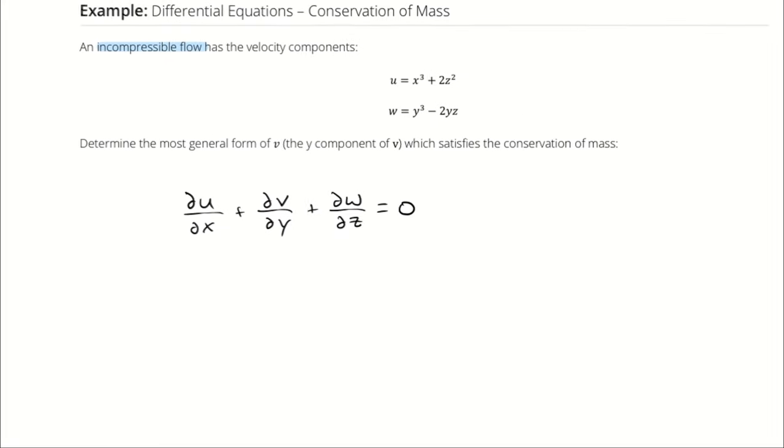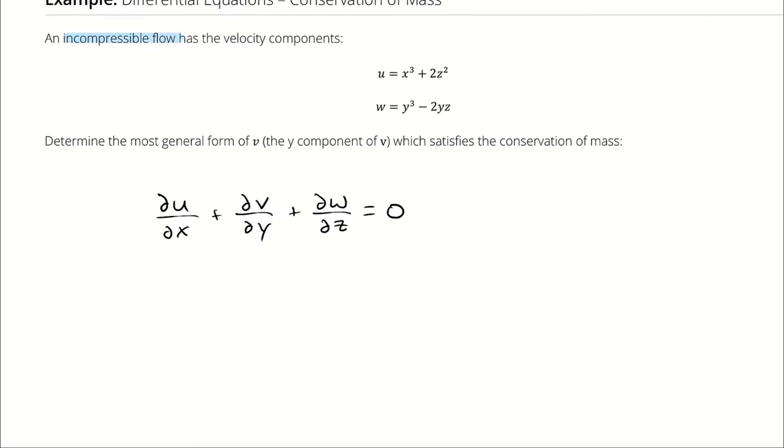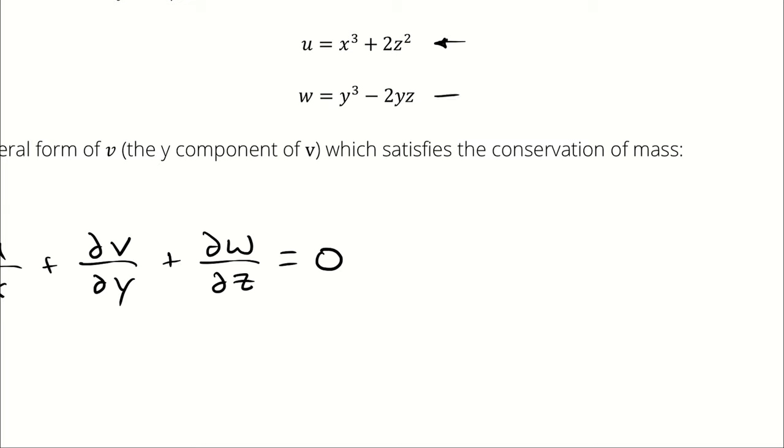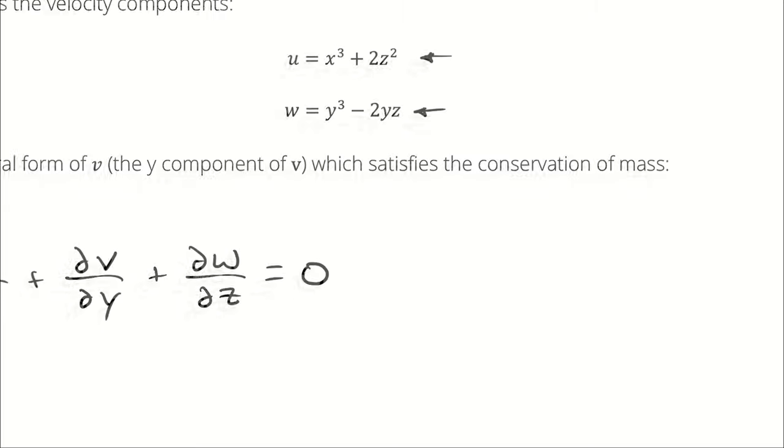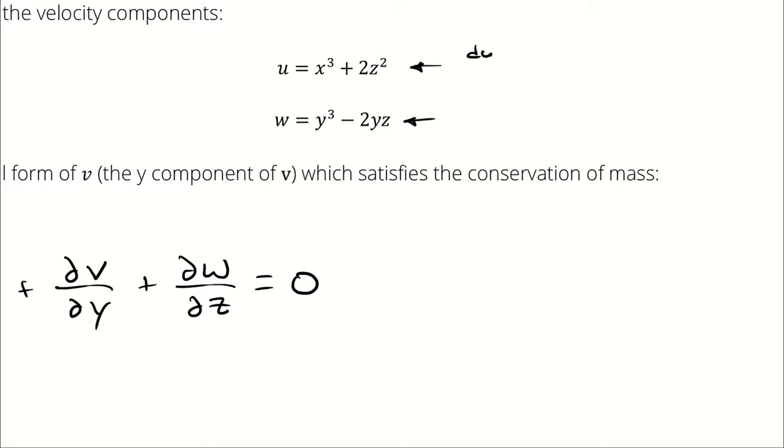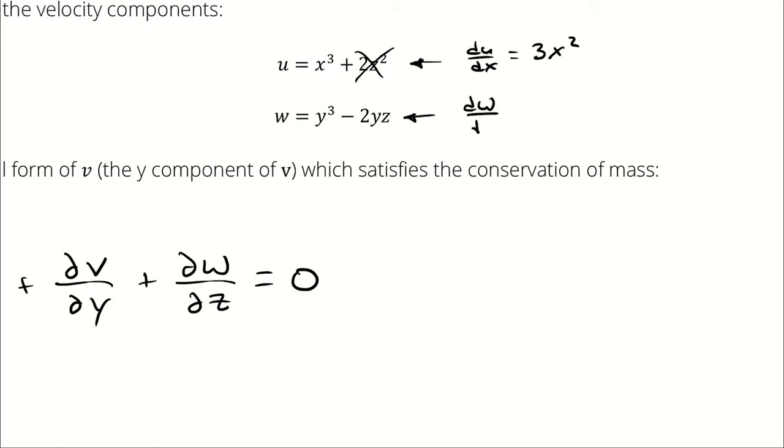We can take that form of the conservation of mass and plug in the derivative of this equation with respect to x and this equation with respect to z. The derivative of u with respect to x is just going to be 3x squared because the second term is treated as a constant. The derivative of w with respect to z is just going to be minus 2y because the y cubed term is treated as a constant.